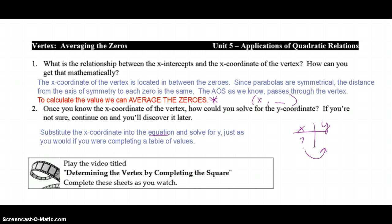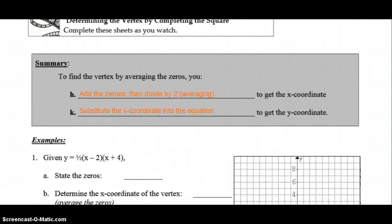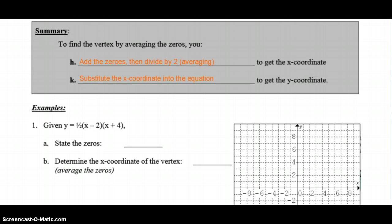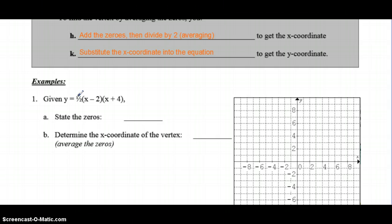Just to summarize in simple terms: to find the vertex, add the zeros, then divide by two, or average the zeros. Then substitute the x-coordinate into the equation. For step one, given this equation, we need to identify the zeros and average them. The zeros here: either x minus 2 equals 0, which means x is 2, or x plus 4 equals 0, which is x equals negative 4. So my zeros are 2 and negative 4.